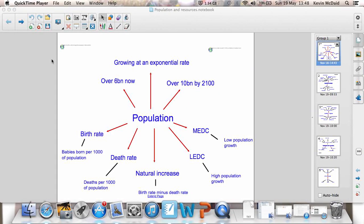So the first two topics on your paper in June will be population and the second one will be resources. They're both very much interlinked, so we'll look at them both at the same time now.